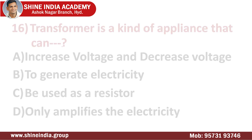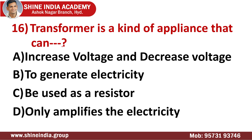Question number sixteen: a transformer is a kind of appliance that can? We try to eliminate the wrong options. A generator converts motive power — that is, mechanical power — into electricity, so that is not the right answer here. A transformer is a device used to either raise or lower voltages and currents in an electric circuit. Generally, transformers are used to boost voltage levels, and sometimes these are called voltage transformers. The right answer is increase or decrease voltage.